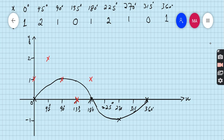When x is 225 then y is 2. When x is 270 then y is 1. When x is 315 then y is 0. When x is 360 then y is 1. Now join all the points, join all red crosses.